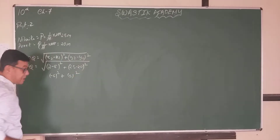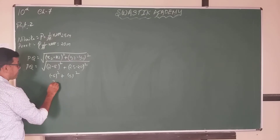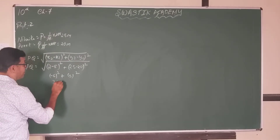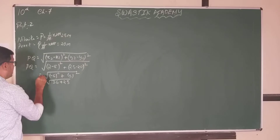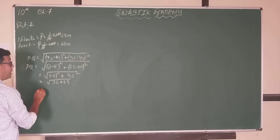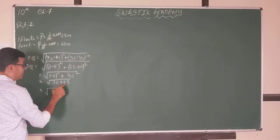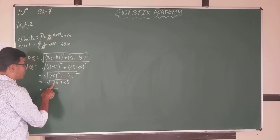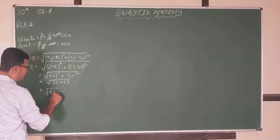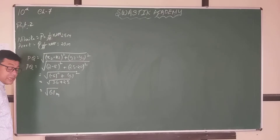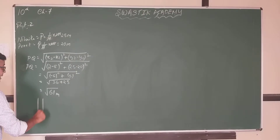So it will be 36 plus 25, which equals the square root of 61. Therefore, the distance between the two different flag positions is √61 meters.